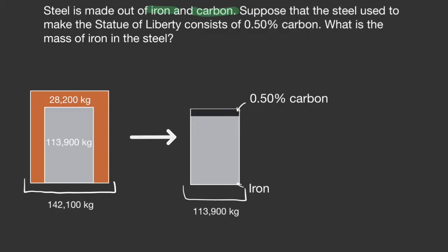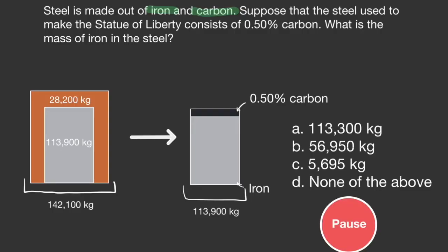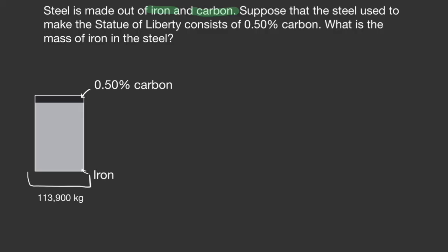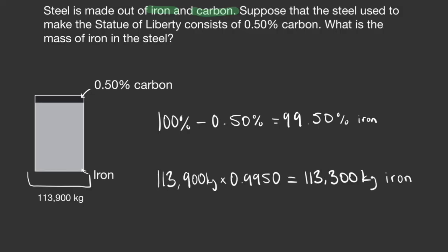Now let's return to the question: how would we find out how much iron there is? Pause the video and try this on your own. We have the percent of carbon, but we're missing the percent of iron. Remember that the percentages add up to 100%, so 100% minus 0.5% gives us 99.5% iron. Now we just need to multiply 99.5% by the mass of steel, which is 113,900 kilograms. That gives us 113,900 × 0.995 = 113,300 kilograms of iron.